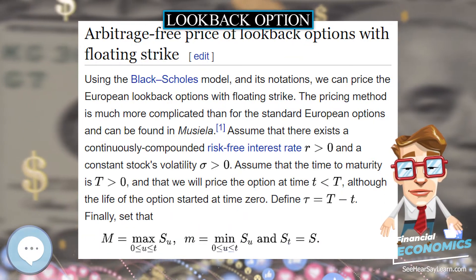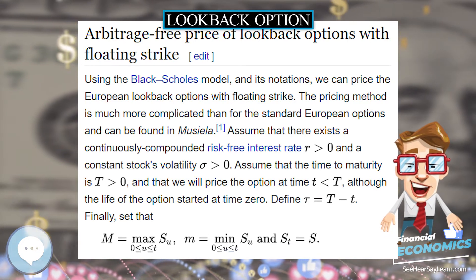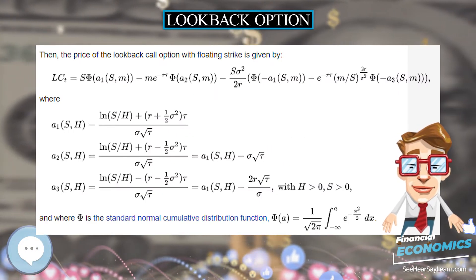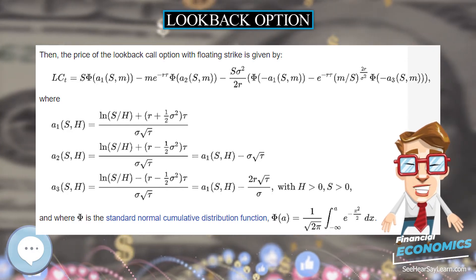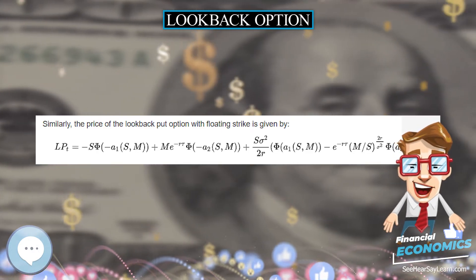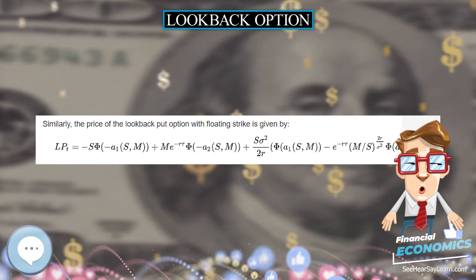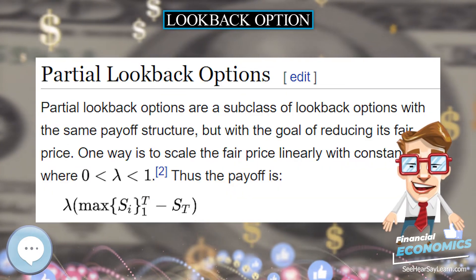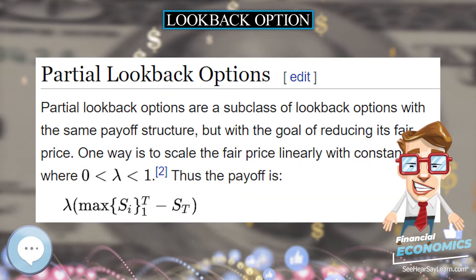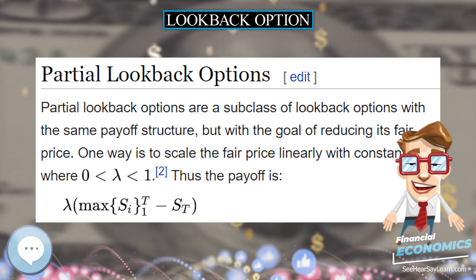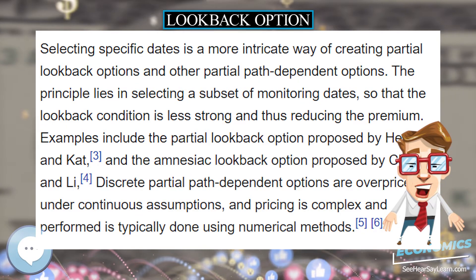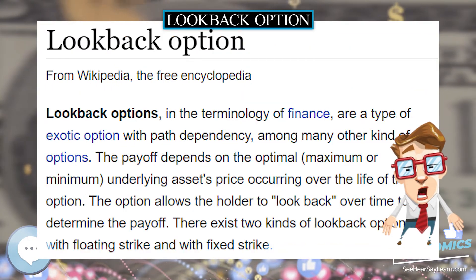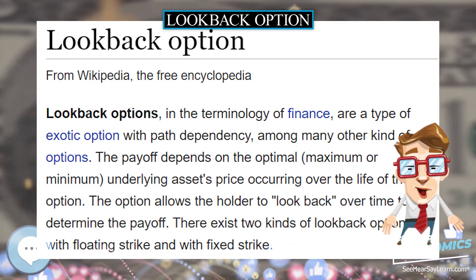The payoff functions for the lookback call and the lookback put, respectively, are given by K. Where SMAX is the asset's maximum price during the life of the option, SMIN is the asset's minimum price during the life of the option, and K is the strike price.